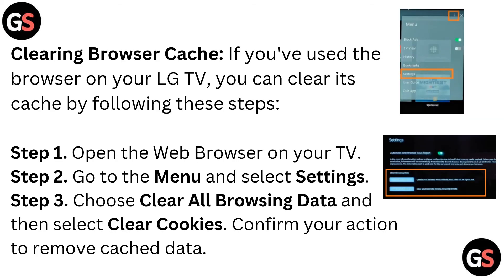Clearing browser cache. If you have used the browser on your LG TV, you can clear its cache by following these steps. Step 1: Open the web browser on your TV. Step 2: Go to menu and select settings. Step 3: Choose clear all browsing data and select clear cookies. Confirm your action to remove all cached data.